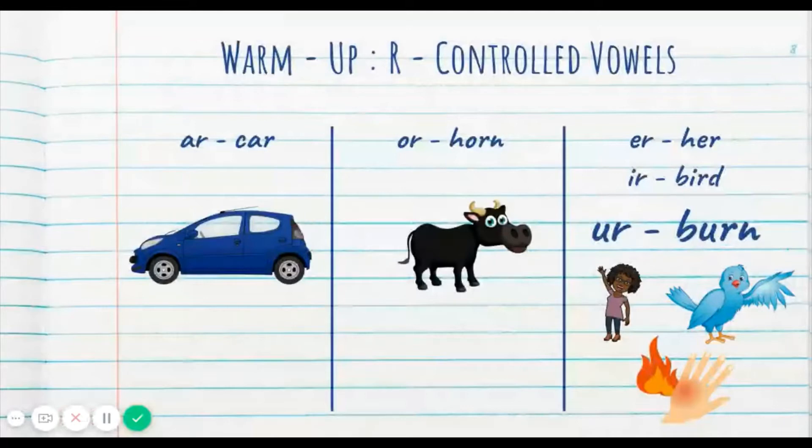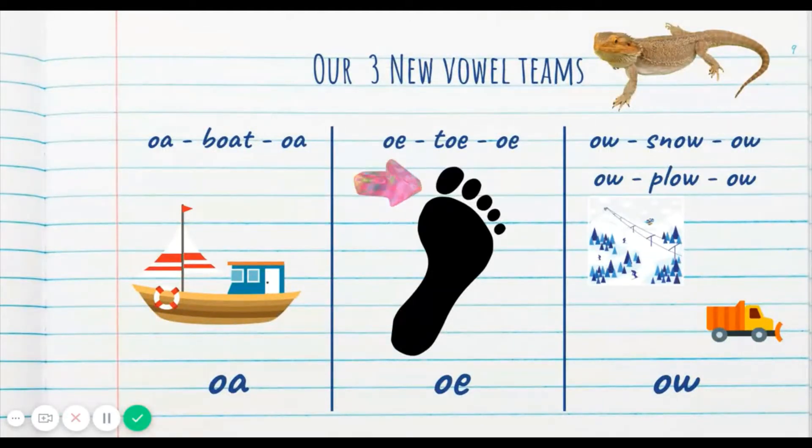So we're not going to spend too much time on that because that is just our warmup. But if you want, please feel free to rewind the video and go over it again and try to test some people around. All right. So let's get started with what we wanted to do today. And that is our three new vowel teams. So the first vowel team that we have is O-A. That makes an O sound like the word boat. The next vowel team is O and E. That also makes an O sound like in toe. And the last vowel team is O-W. But you'll notice there's two pictures and two different words for O-W. One makes an O sound like snow and the other makes an ow sound like plow or ow, I got a boo-boo.